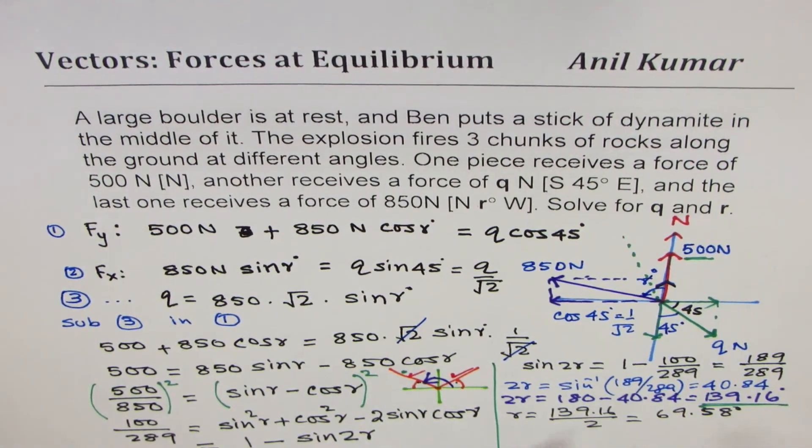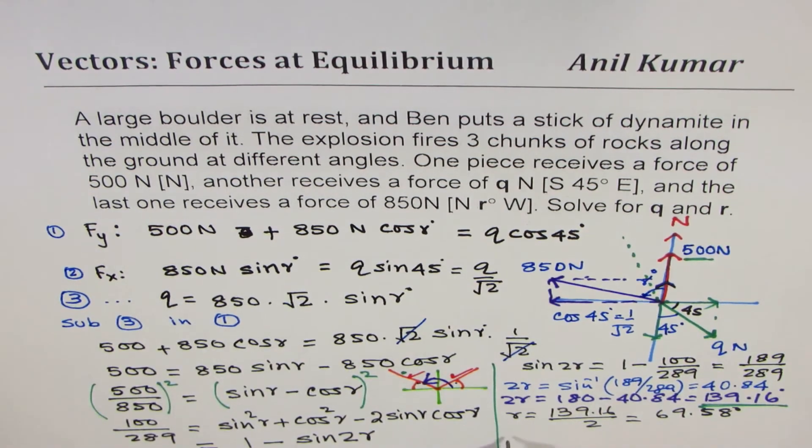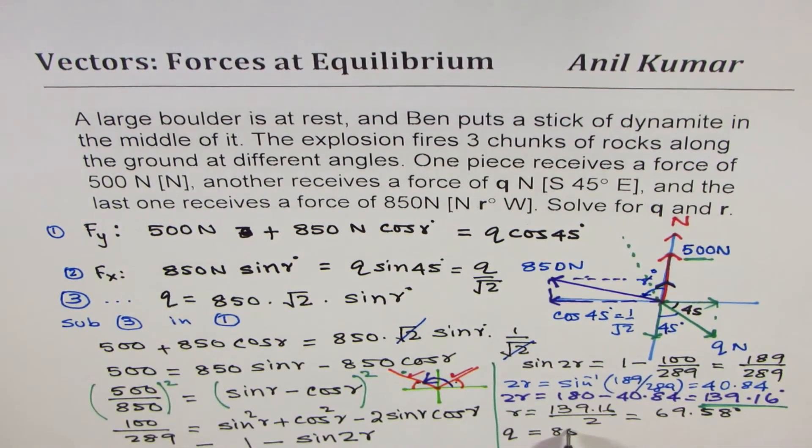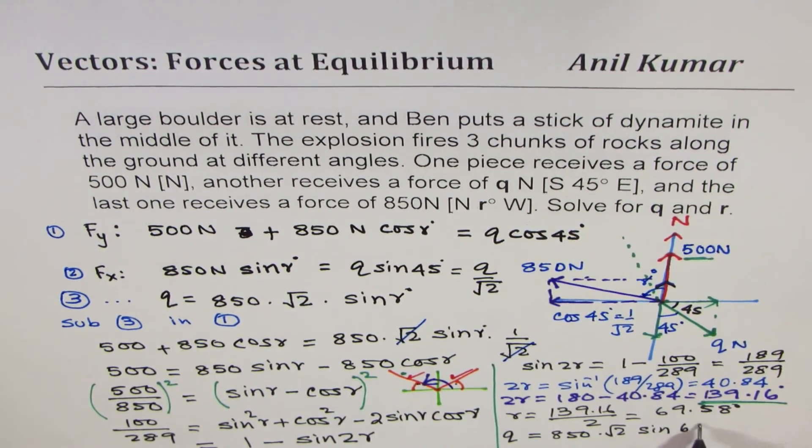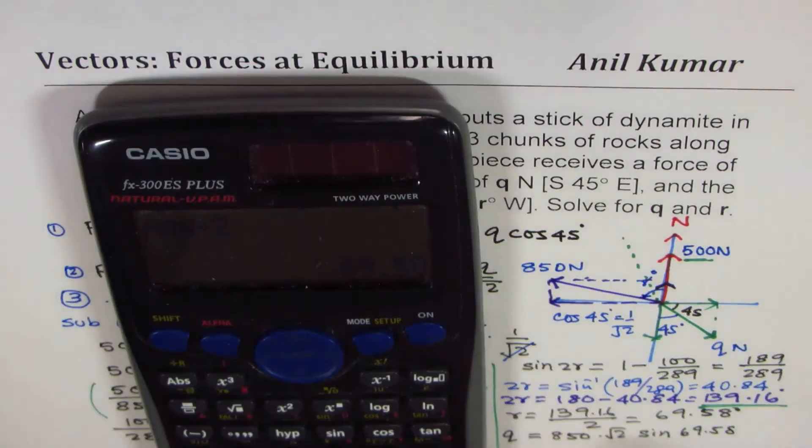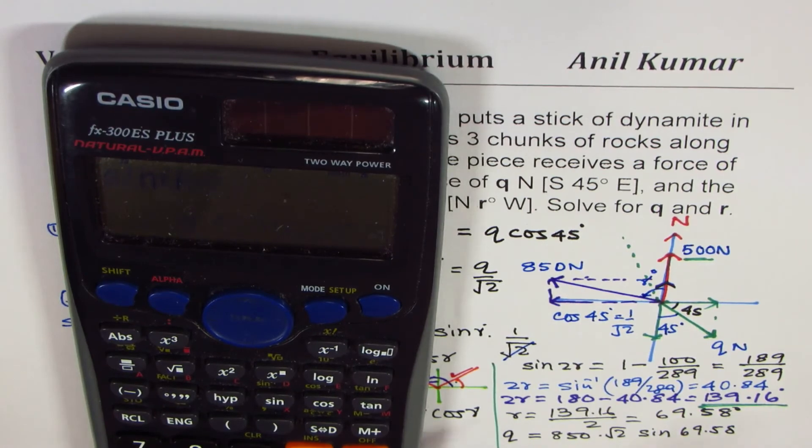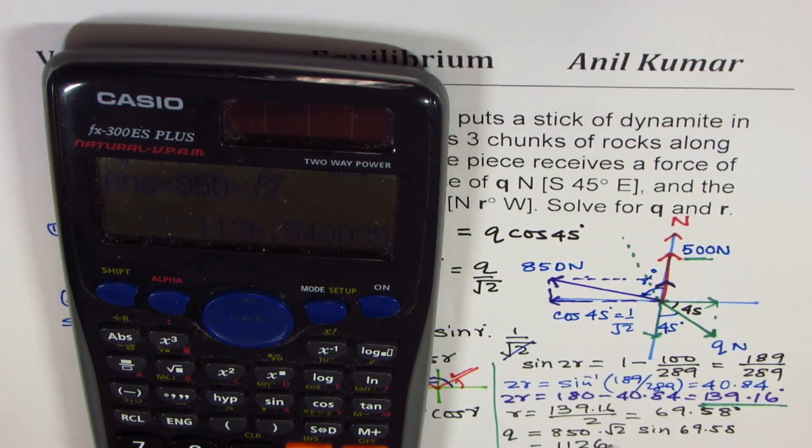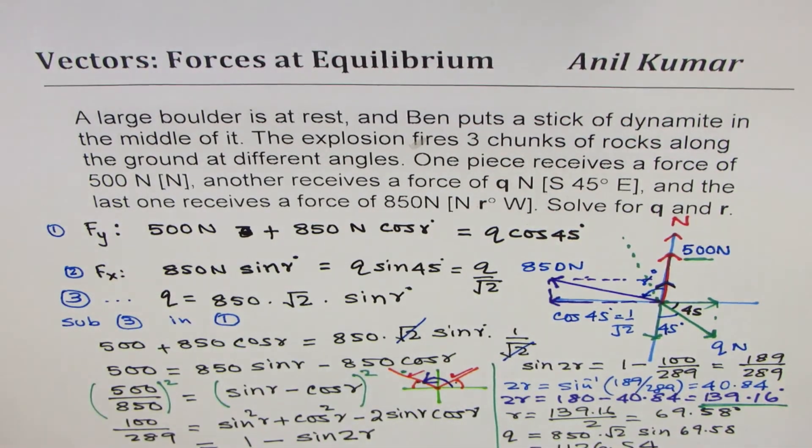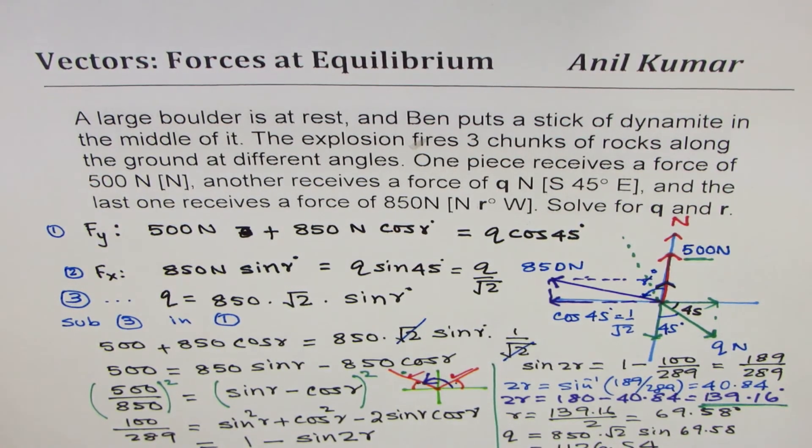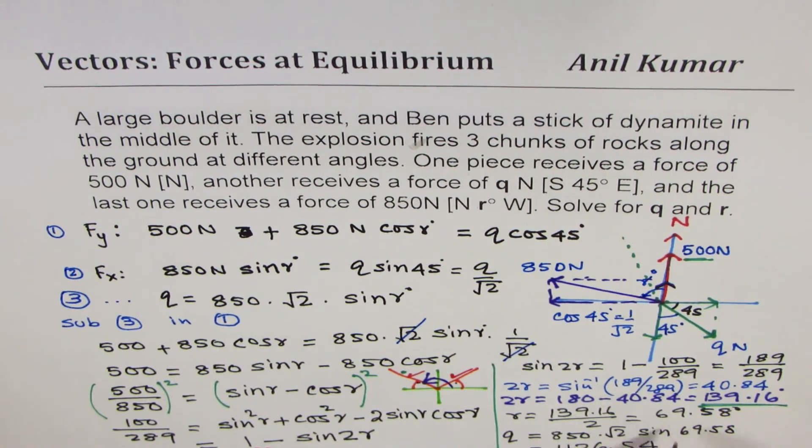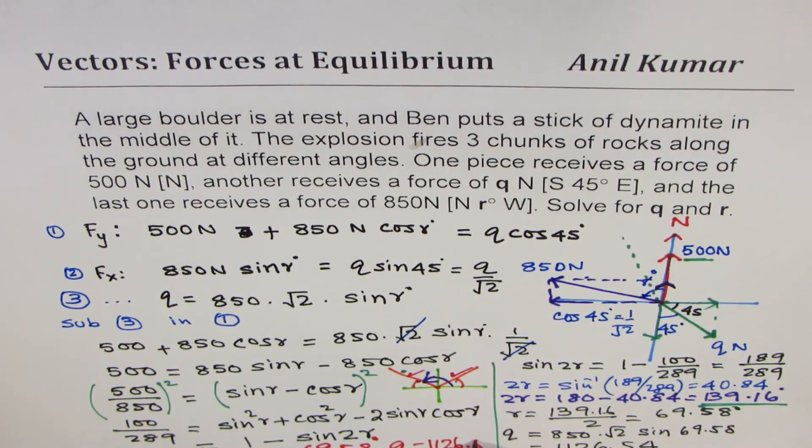Once you get the value of r, you can always find what q is. So, let's calculate what q is. So, q is equal to, that is the angle r which we are looking for. And q is 850 times square root 2 times sine of 69.58. So, we have 69.58. Let's find sine of this angle. And then we will multiply this by 850 times square root 2. And we get q as equals to 1126.54. So, that becomes the value of q. That is our answer. So, we get our answer as r equals to 69.58 degrees and q equals to 1126.54 newtons.